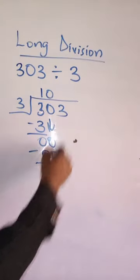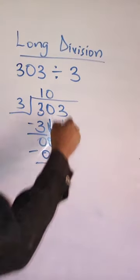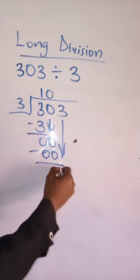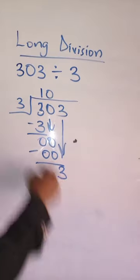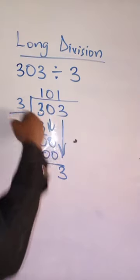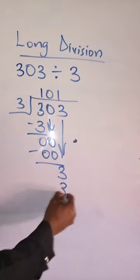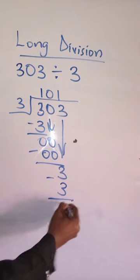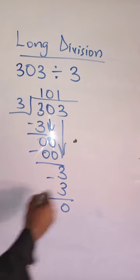Bring down 3. 3 divided by 3 is 1. 1 times 3 is 3. We subtract again — 0.